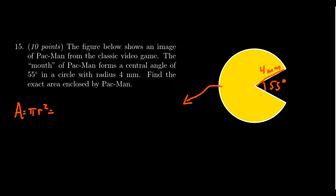The total area of the circle would be area equals pi r squared. This is going to be pi times four squared, which gives us 16 pi millimeters squared. We're not going to approximate this thing yet. We're going to look at the area of Pac-Man, the whole circle, and then subtract from it the area of his mouth.